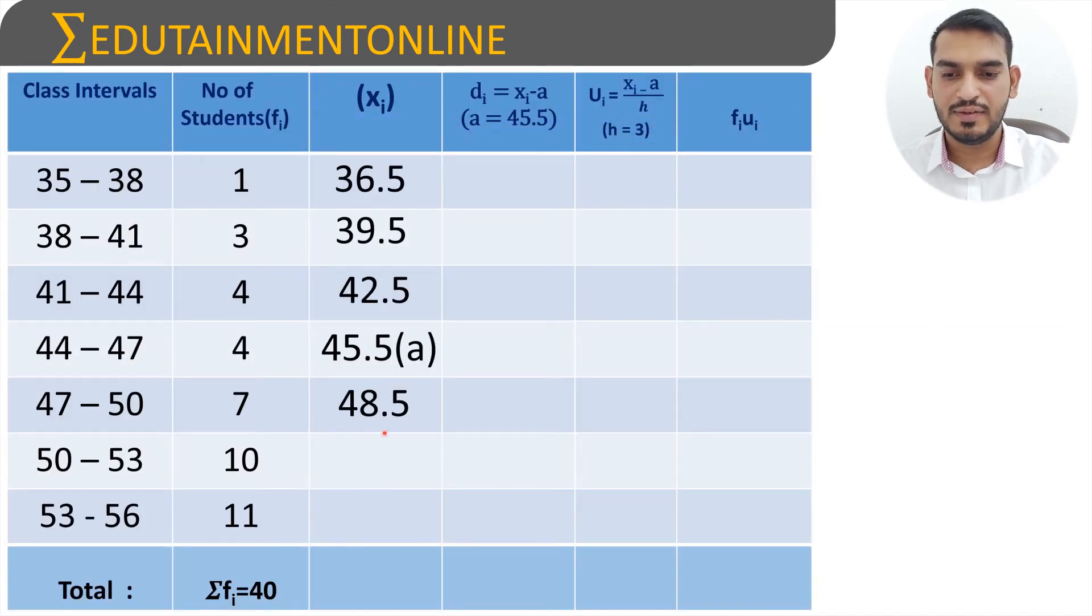So first we will write the xi. Now 45.5 is the assumed mean which is denoted by a here. So to find di we have to subtract xi minus assumed mean, which is 36.5 minus 45.5 will be minus 9, and minus 9 divided by 3 is minus 3, minus 3 times of 1 is minus 3.